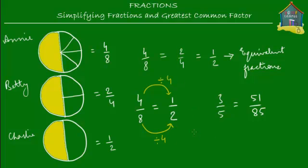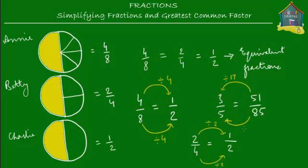Similarly, if I take 2/4, to simplify it I divide the numerator and the denominator both by 2. 2 divided by 2 gives you 1, and 4 divided by 2 gives you 2. So your 2/4 gets simplified to 1/2. Similarly, with 51/85, I divide 51 and 85 both by 17. So the simplified version of 51/85 is 3/5.